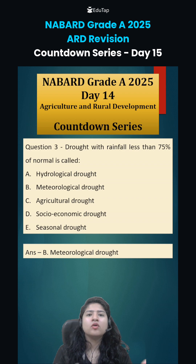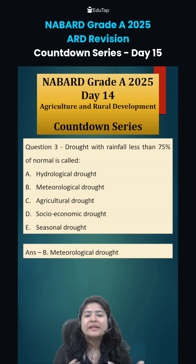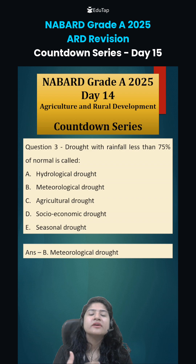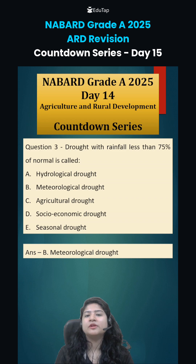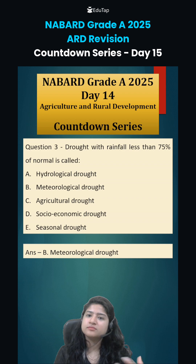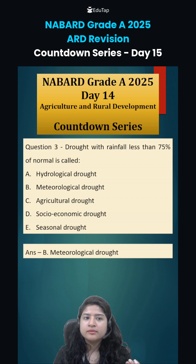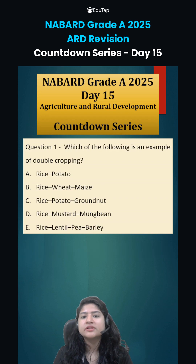Hydrological drought means there is less water than normal in lakes, rivers, and other water bodies. Agricultural drought is when water becomes insufficient for plants to sustain. Socio-economic drought is when people don't have access to water. Seasonal drought is short-term water scarcity. Those were the answers to yesterday's three questions.